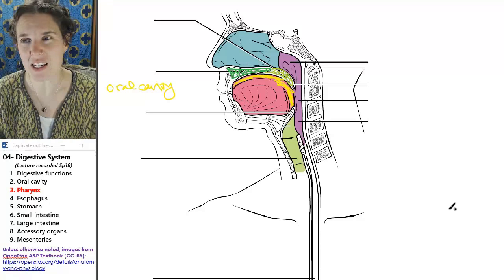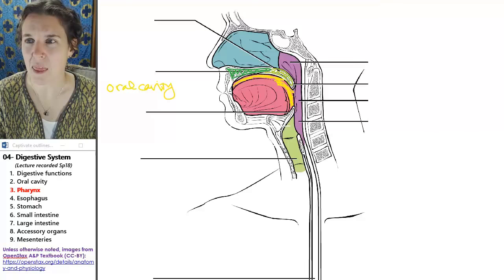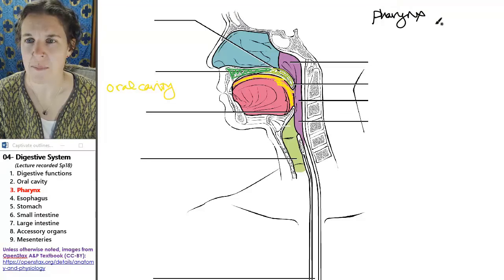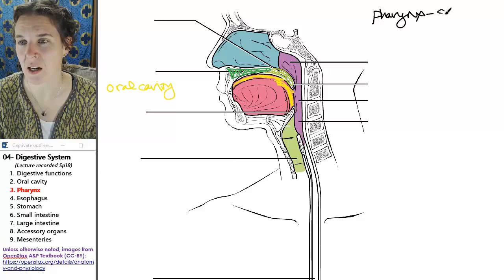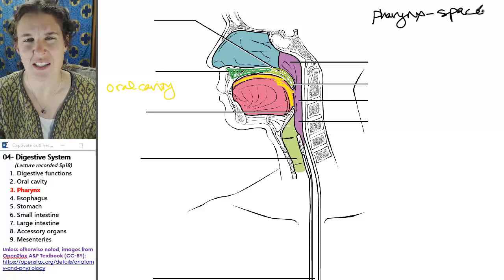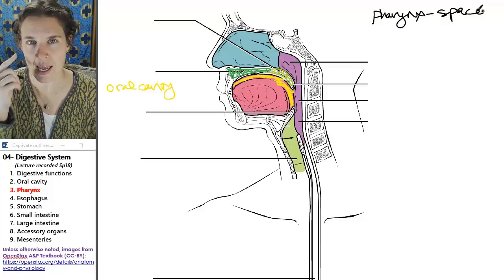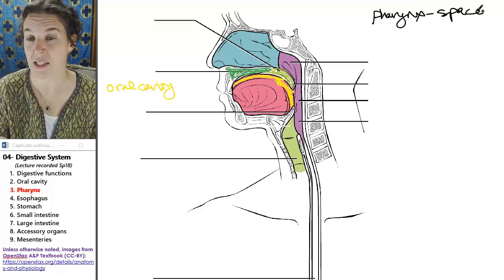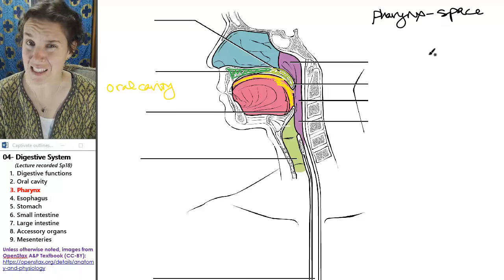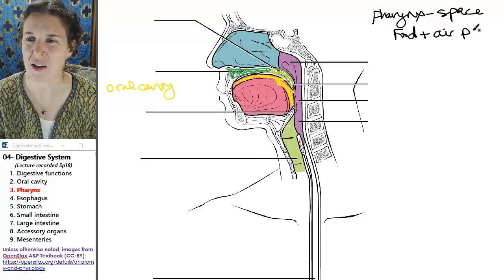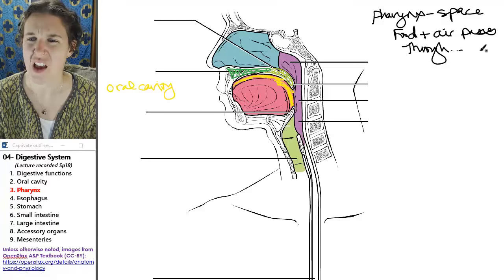Okay, so a pharynx, let's define this puppy. A pharynx is a space. Spaces are usually defined by structures. They don't just float in nothingness. So there's anatomical structure surrounding the space and defining it, but it's still a space that food and air passes through.